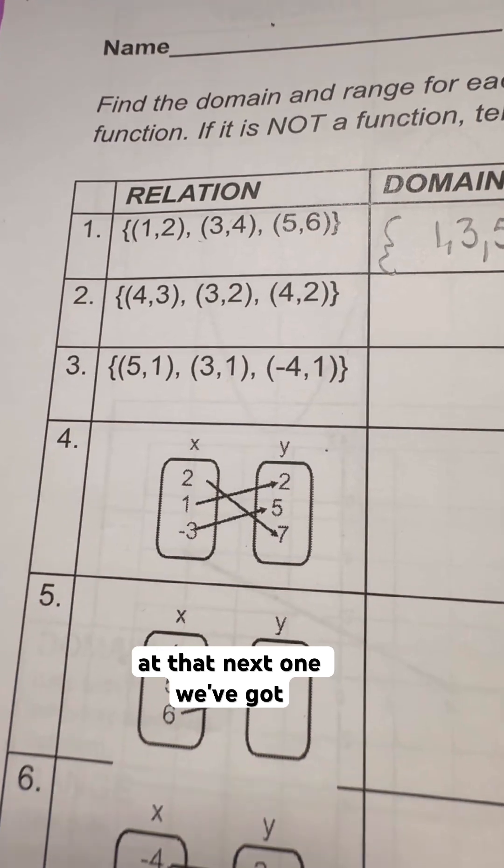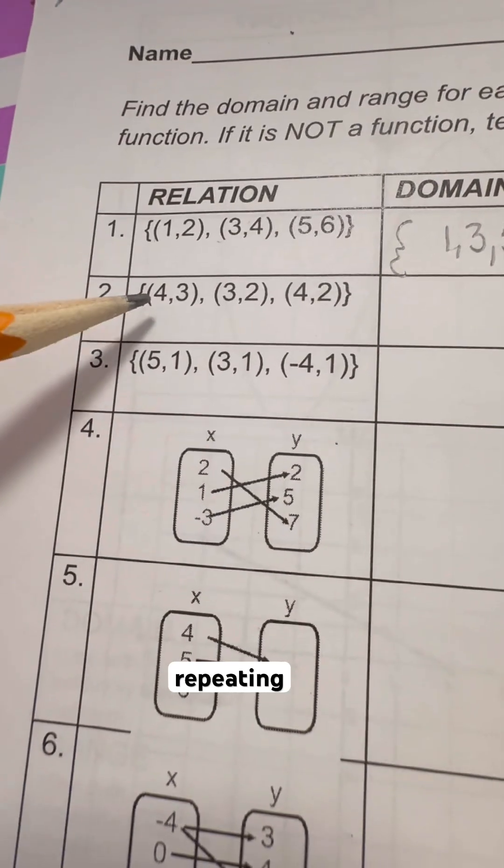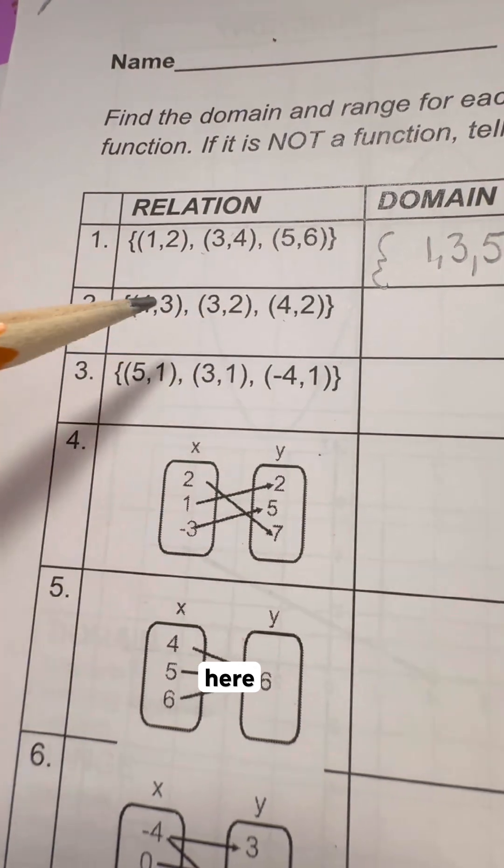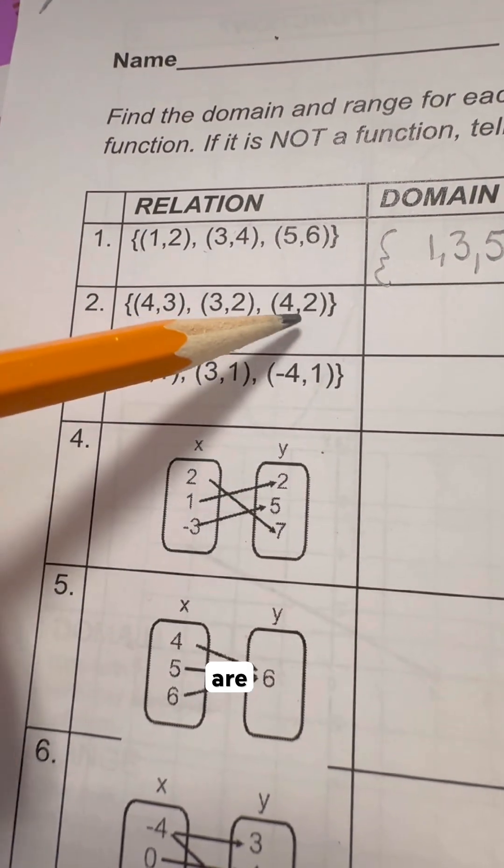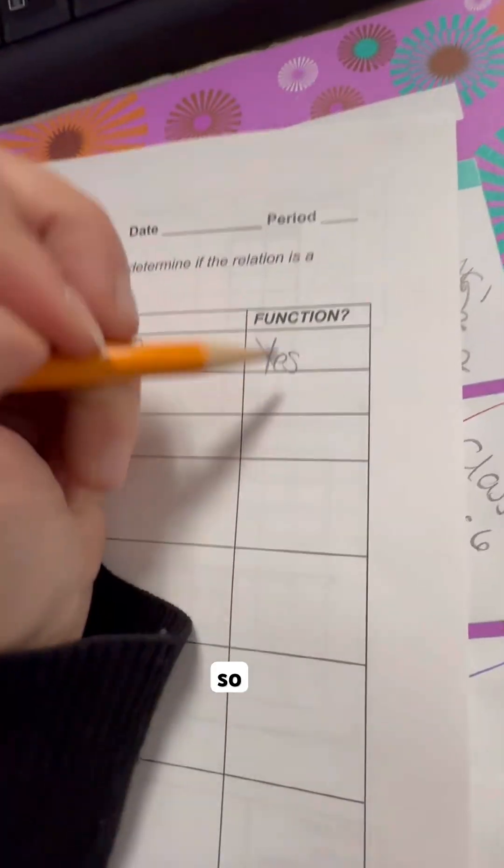Looking at that next one, we've got 4, 3, and 4. I do see a repeating x value here and here. We look at the y's. They are different. So since they are different, that makes it not a function. So if they were the same, they'd be fine, but that's not the case.